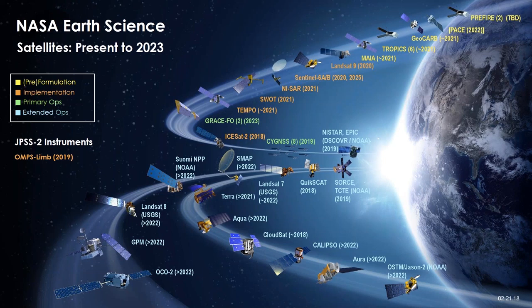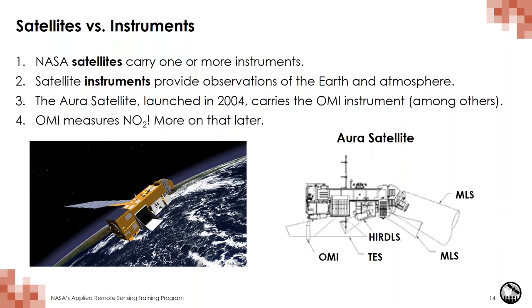NASA has a large fleet of instruments that make Earth observations. Today, we're going to be focusing on measurements made by the Ozone Monitoring Instrument, or OMI, onboard the Aura satellite. There's a difference between a satellite and a sensor or instrument. The satellite is the platform on which the instruments are placed. Sometimes the two names might be used interchangeably, but other satellites, like Aura shown here, have a lot of sensors. Aura has four instruments on board: OMI, TESS, HIRDLS, and MLS. Today we're going to be focusing on OMI.